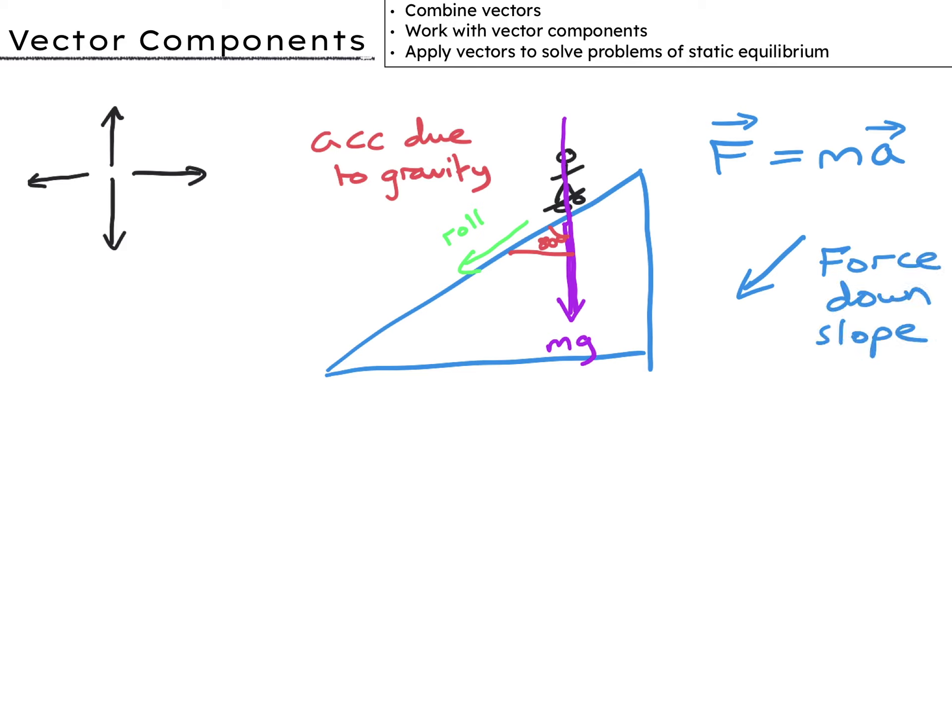Well, imagine we break the force due to gravity into two components, like so. Only this green arrow contributes to the acceleration of the skateboarder. So by breaking a force into its components, we can solve real world problems. It's useful.